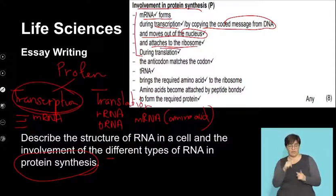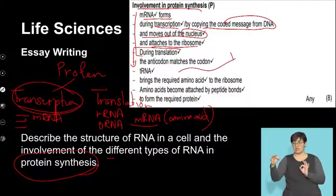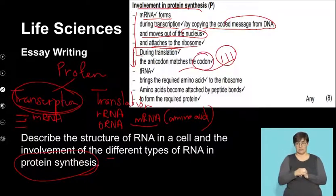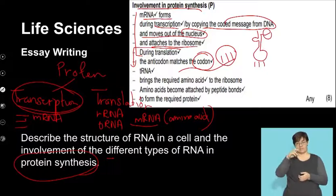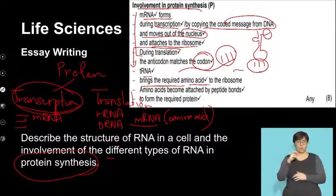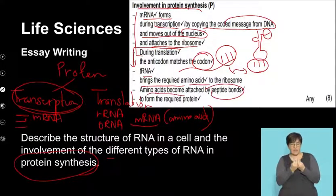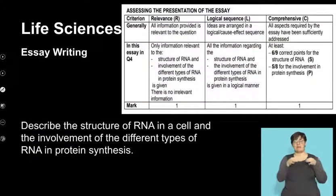It then moves into translation, where we see the mRNA - which is that strand containing codons. The tRNA brings in the required amino acids. We talk about the bases on the tRNA and the bases on the mRNA forming the codon and anticodon bonding. The amino acids then come in and are held together with peptide bonds, eventually forming a polypeptide chain. That describes essentially the process of protein synthesis.